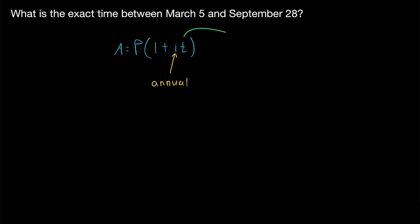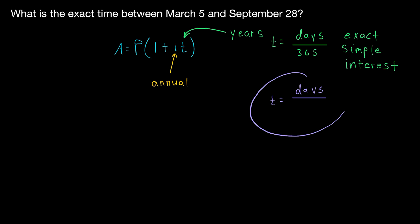This means that the time that has passed, T, needs to be measured in years. To determine T, the amount of time in years between two dates, we find the number of days between those dates and divide by the total number of days in a year — 365, or 366 if it's a leap year. Dividing by 365 or 366 is called exact simple interest. Another common convention is to divide by 360, and that's called ordinary simple interest.